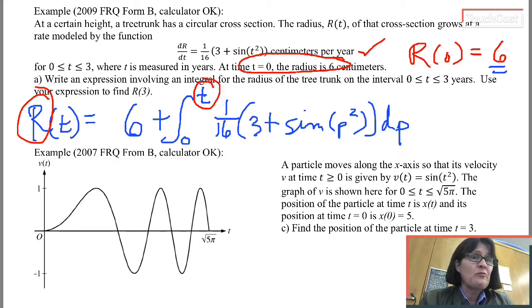This is the first half of part A. I've written an expression for the radius of the tree trunk that's good for it. I could use any value between 0 and 3 as my t, and this would give me the correct answer.